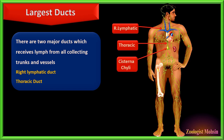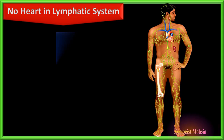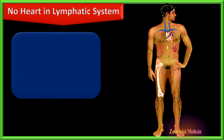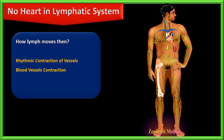How does lymph move in the body when there is no heart to pump it? The lymphatic system has no heart, so how does fluid move in the vessels? The answer is the rhythmic contraction of lymphatic vessels. When vessels are filled they contract to push the fluid forward, and the valves in their walls prevent backflow.